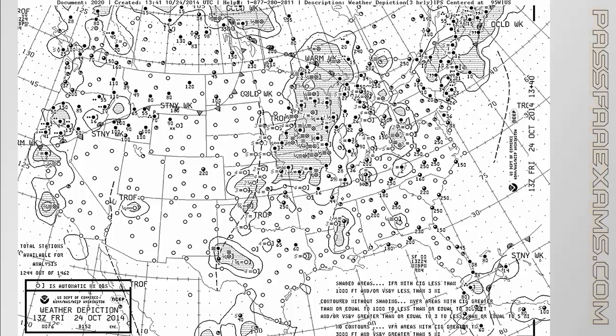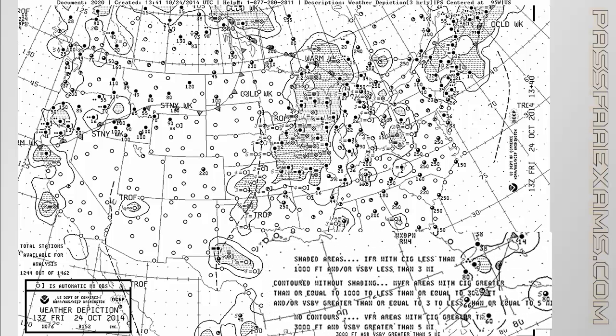The first thing you need to know is that the legend at the bottom right corner, which is always there, will give you some good information, especially for the test questions, as it will tell you what the contours signify, and also give you the definition of VFR, marginal VFR, and IFR, which could appear in other questions that have nothing to do with this chart. The chart is available during the test in the supplement books, so you can always refer to it to figure out what the definitions are.